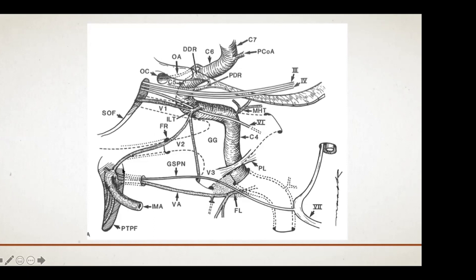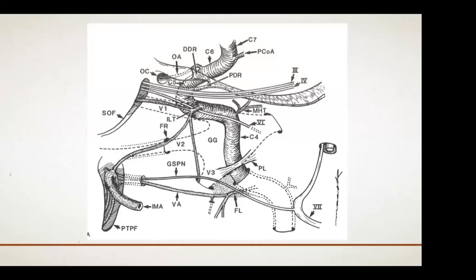The circle of Willis diagram is important for learning vessel names, but the vasculature is far more complex in reality. There are extensive anastomoses between various circulations. The external carotid artery has many branches in the face and scalp that anastomose with ICA branches. During chronic internal carotid artery occlusion, these anastomoses can become more prominent or reverse their flow depending on the pathology.